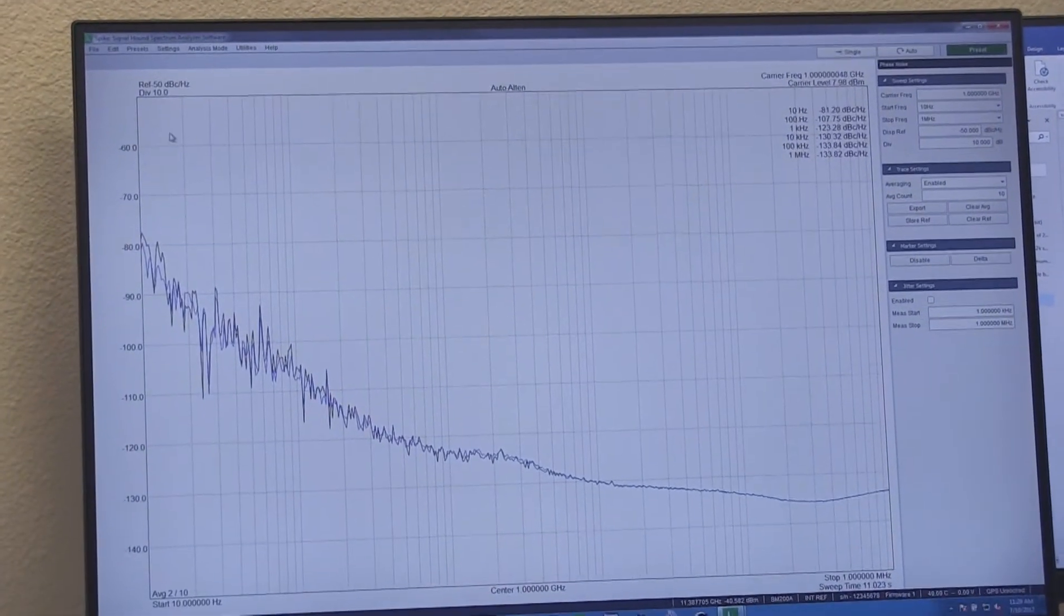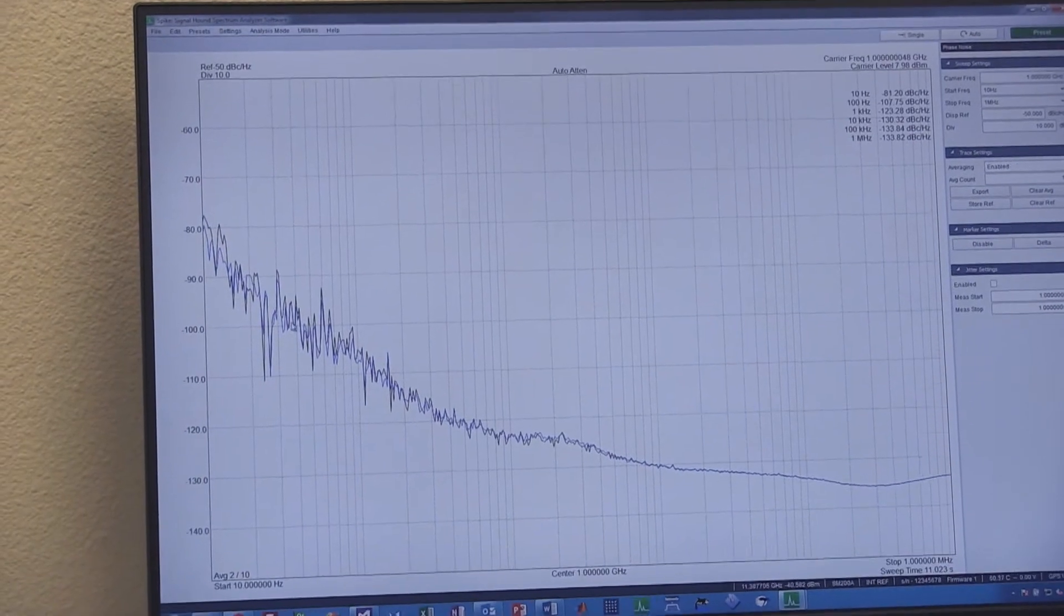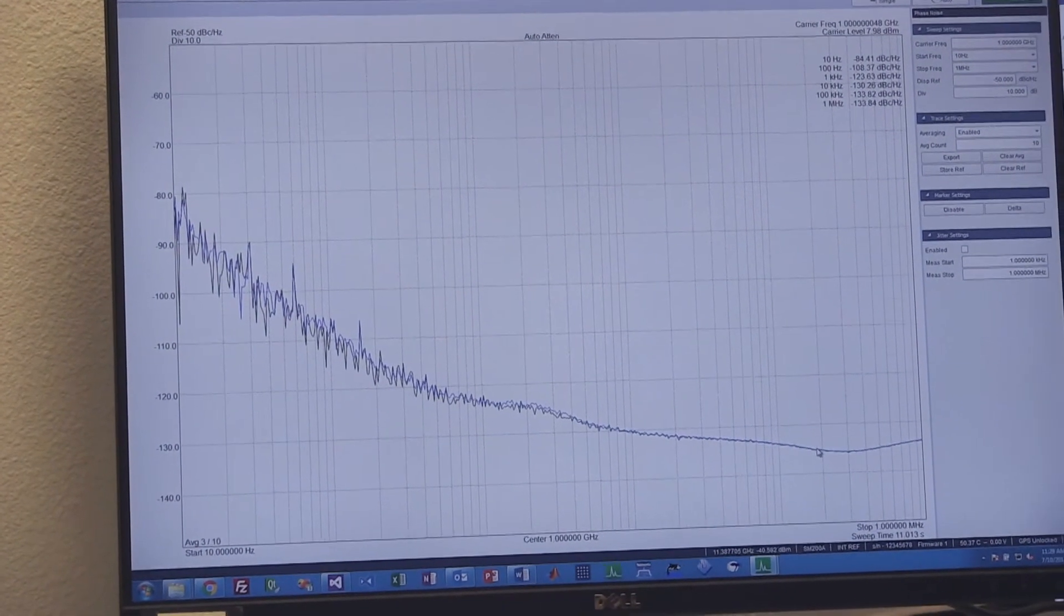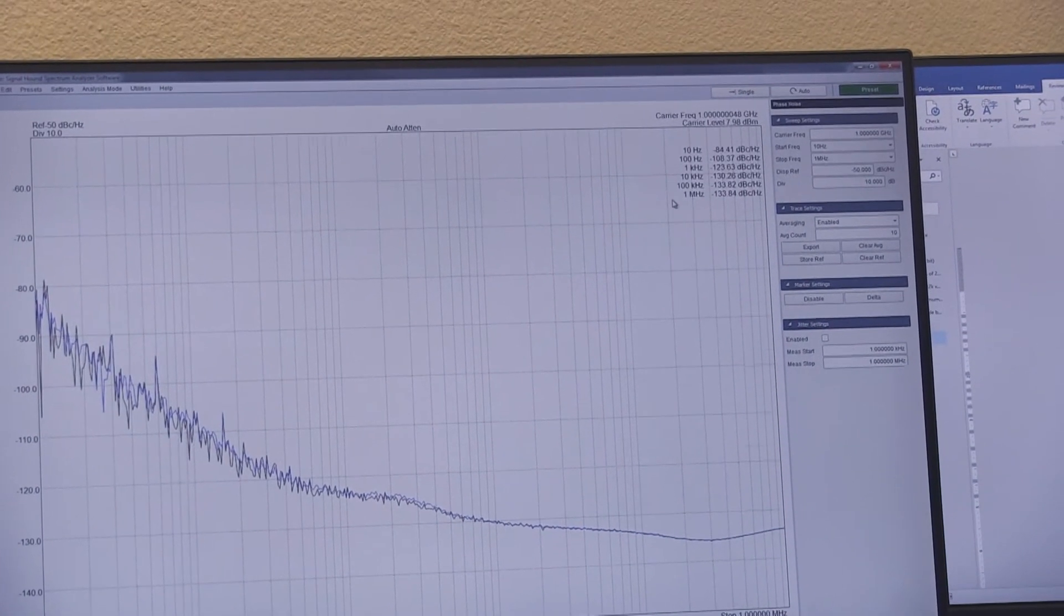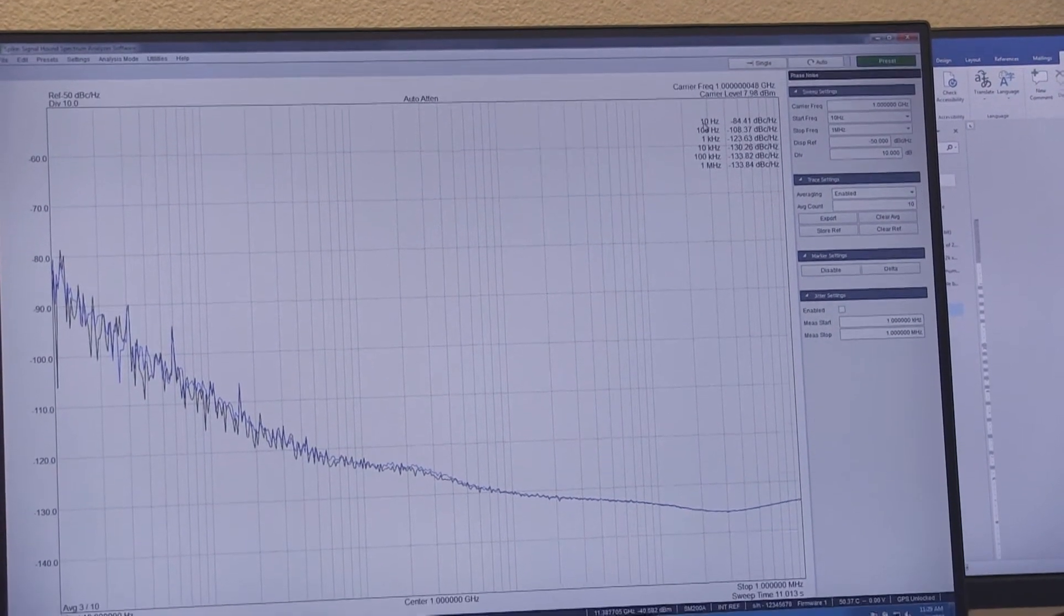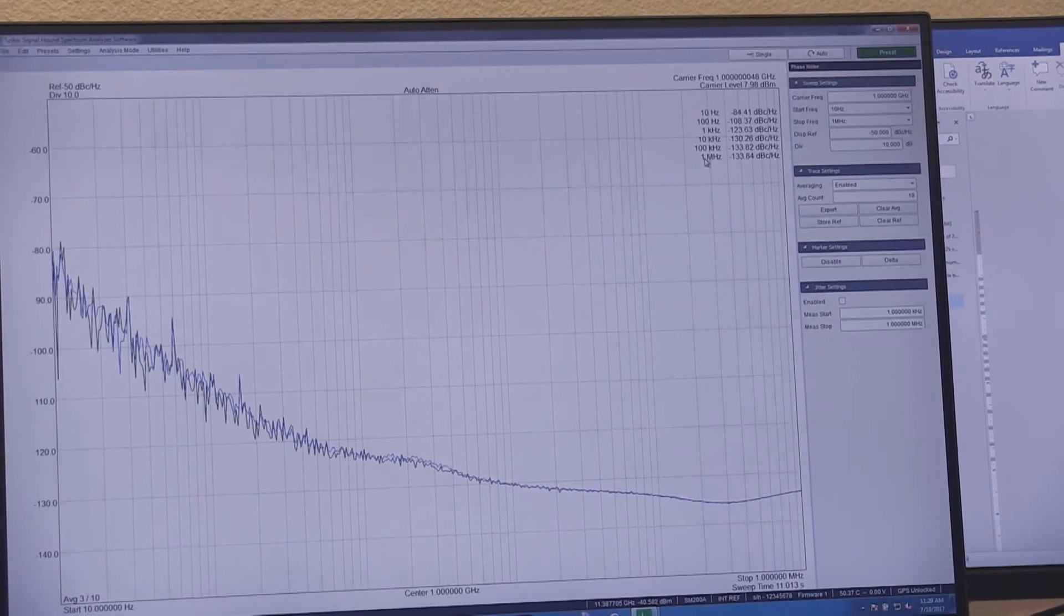You can see that we've got an instant phase noise measurement. It comes out just the same as any standard phase noise that you find from Agilent. We display everything up in the top left corner. Today we've done the same measurement from 10 Hz to 1 MHz for offset.